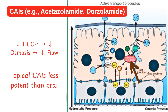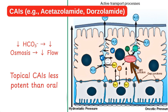Regarding drugs that reduce aqueous production: first are the carbonic anhydrase inhibitors like acetazolamide and dorzolamide. They reduce bicarbonate and hydrogen ion formation by acting on carbonic anhydrase, leading to decreased sodium and chloride transport and, as a result, decreased aqueous formation.